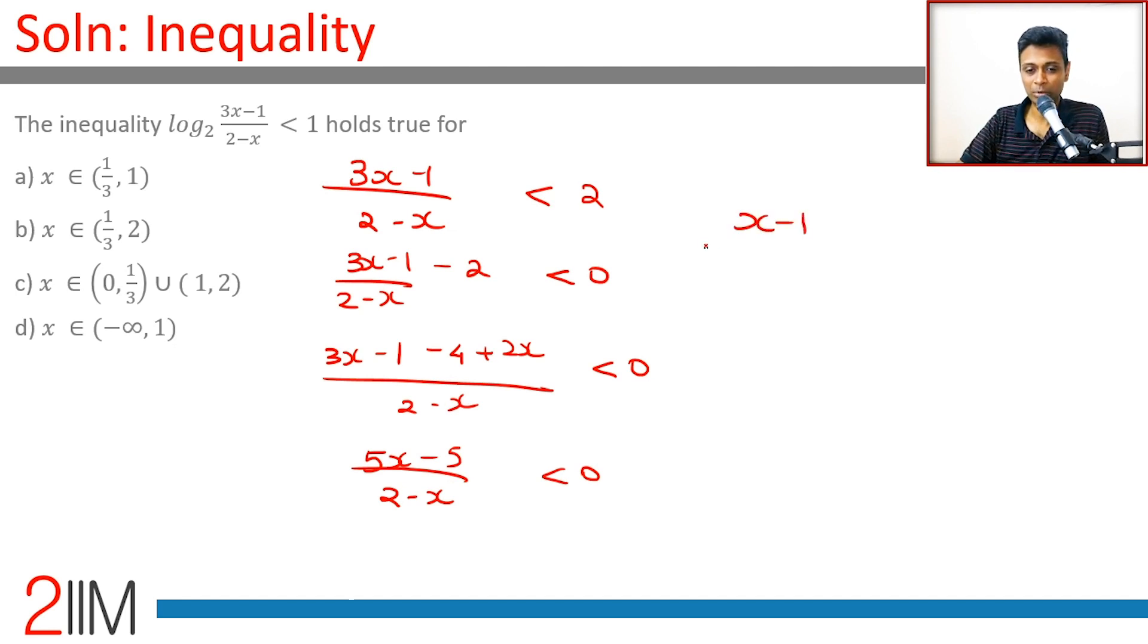Or (x-1)—I'm removing the 5—by (2-x) is less than 0. (x-1)/(2-x) is less than 0.